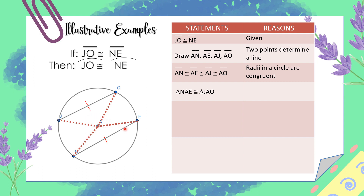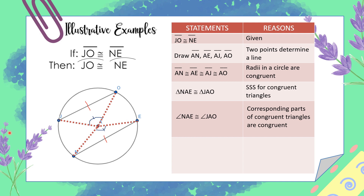Triangle NAE is congruent to triangle JAO by SSS (side-side-side) for congruent triangles. Angle NAE is congruent to angle JAO because corresponding parts of congruent triangles are congruent. Then arc JO is congruent to arc NE, because in a circle, congruent central angles have congruent arcs. Therefore, arc JO and arc NE are congruent.